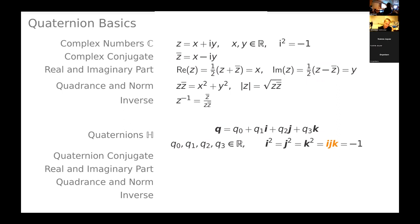Using conjugation, we can define something called the quadrance — according to Norman Wildberger this should be a preferred name, though it's not commonly used. You can also call it the squared norm. If you multiply z and z conjugate, the outcome is x squared plus y squared. Taking the square root gives the norm, just the Euclidean norm of a two-dimensional vector. Using conjugation, we can also define the multiplicative inverse of z as z conjugate divided by the quadrance.